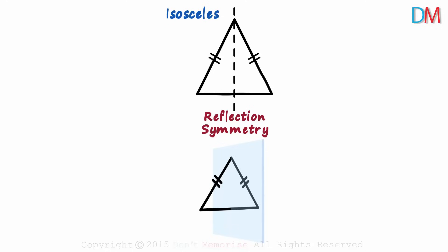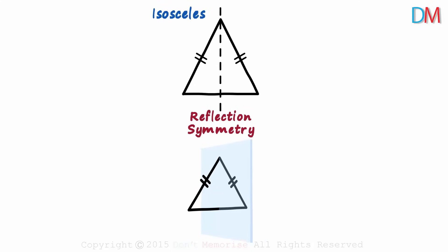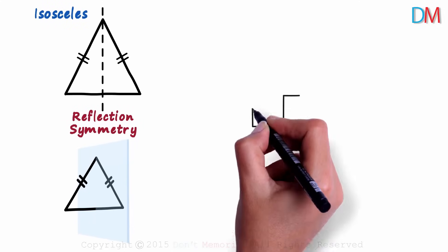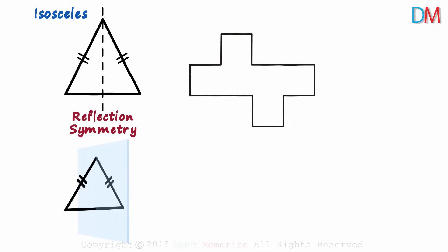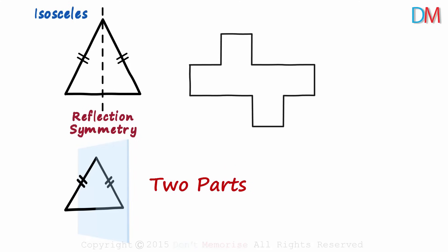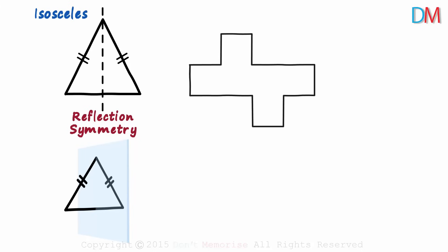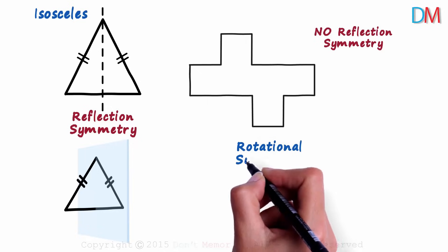What is the other kind of symmetry? Do we have another kind? Here's another figure — this figure is made up of six squares. Now, can we draw a line through it such that the two parts formed match exactly with each other? If we try out different lines, we realize that no such line can be drawn. This shape has no reflection symmetry, but what this shape has is rotational symmetry.